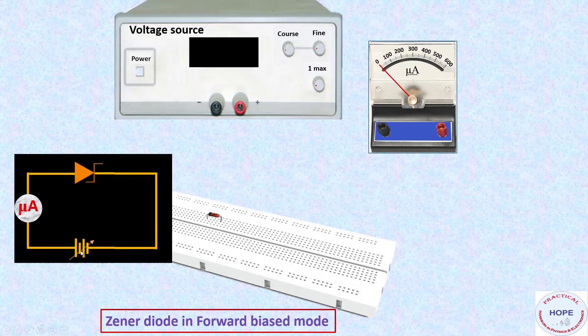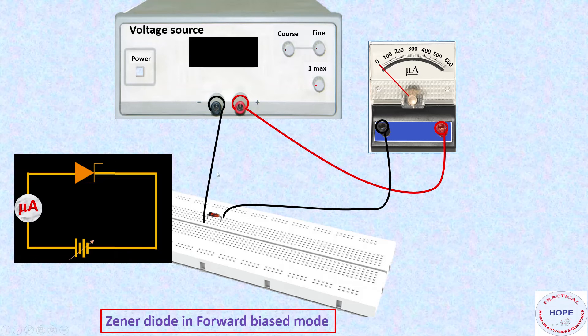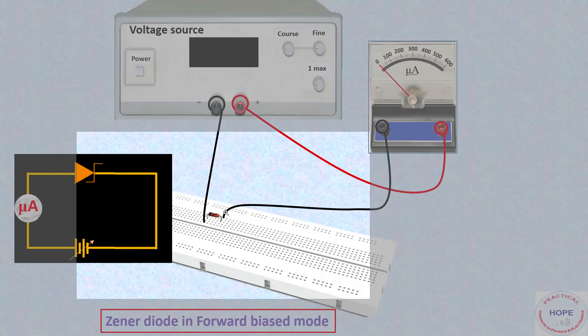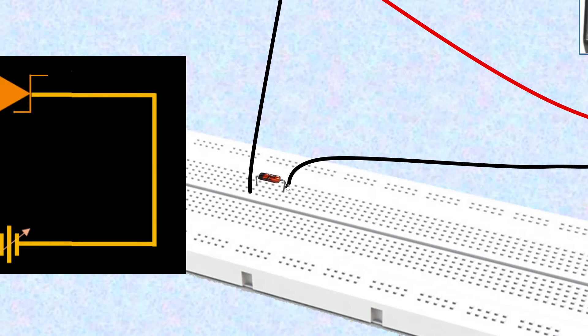So this is the circuit. We have a power supply, micrometer, and Zener diode in series with each other. Let's start making the connection. The positive terminal of the power supply is connected to positive of the micrometer. The negative terminal of the micrometer is connected to P side of the Zener, and N side of the Zener is connected to negative terminal of the power supply. We can zoom it and see the connections.